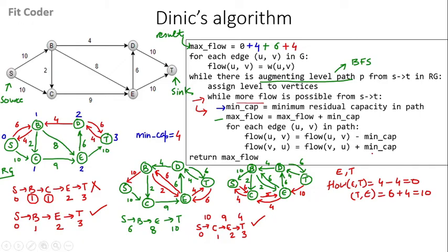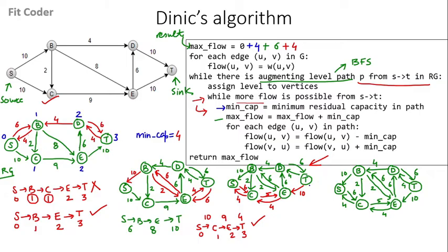Now we check for more flow. There is a path S to C to E to D to T, but D has a level of 2 and E also has a level of 2 — not an augmenting level path, so we cannot take this. More flow is not possible, so we go back to the outer while loop. We do a new BFS traversal. S has level 0, C has level 1 since it's the only outgoing edge from S. From C we go to E at level 2. From E, outgoing edges go to B and D, so both get level 3.